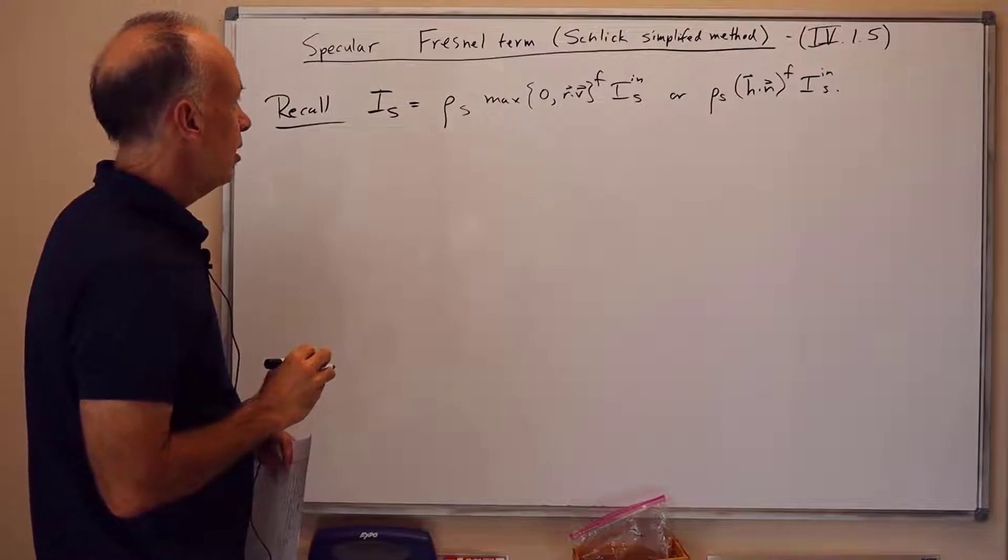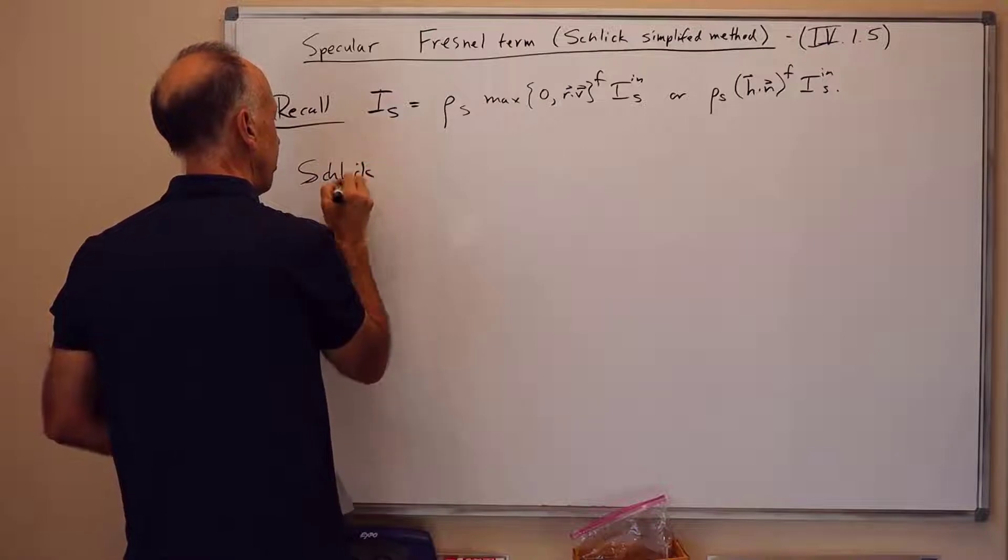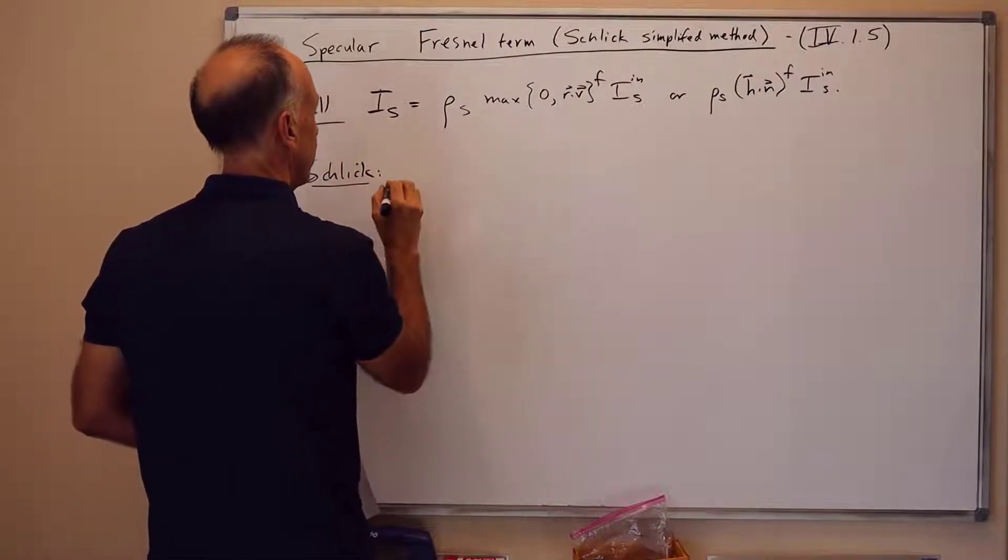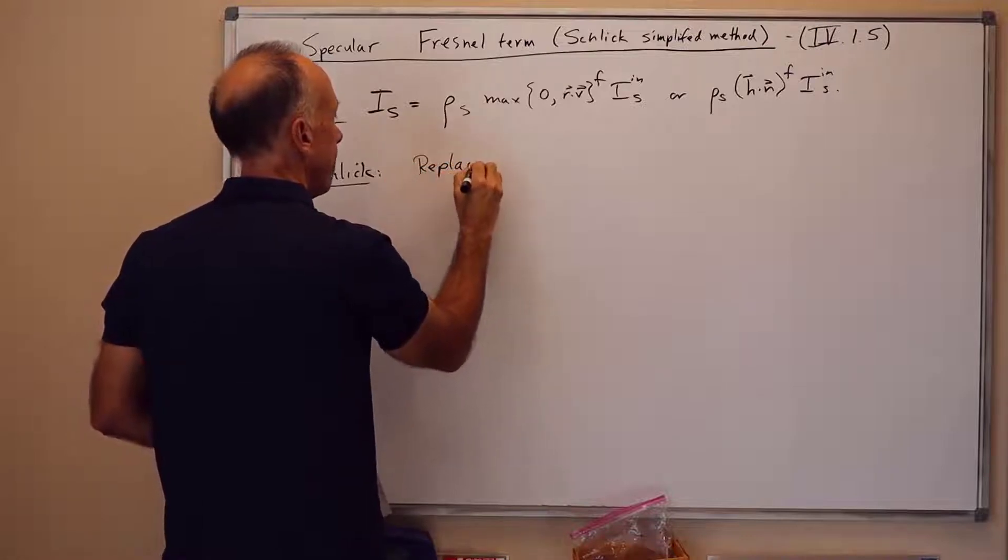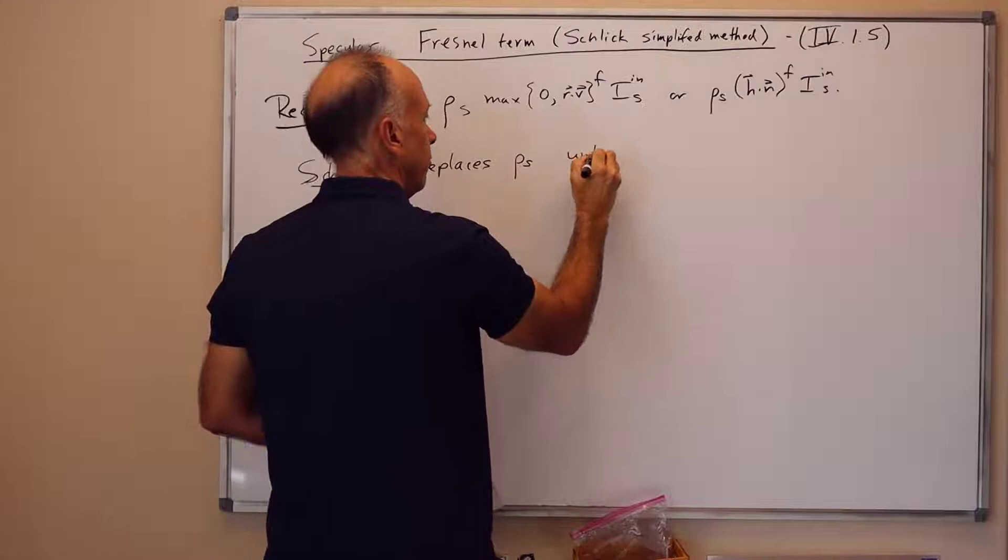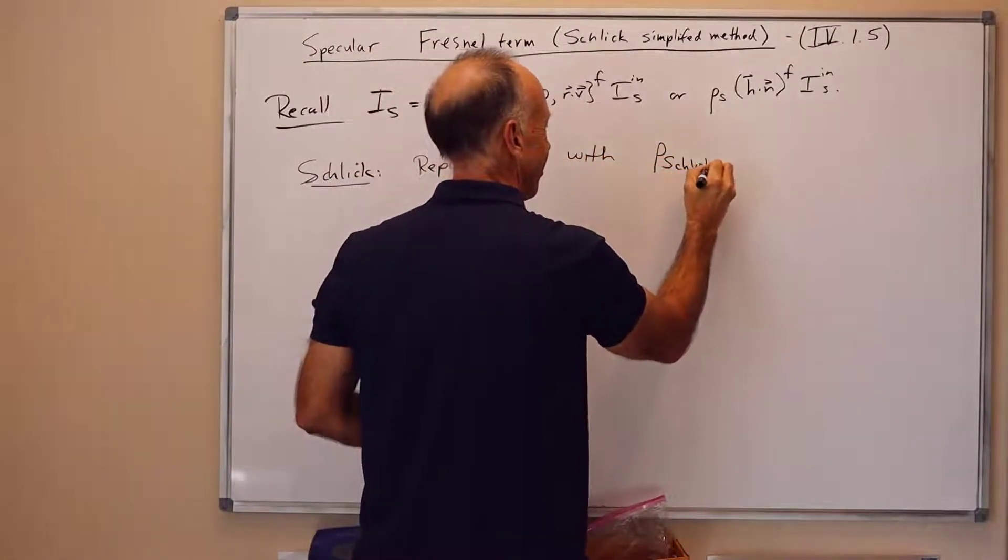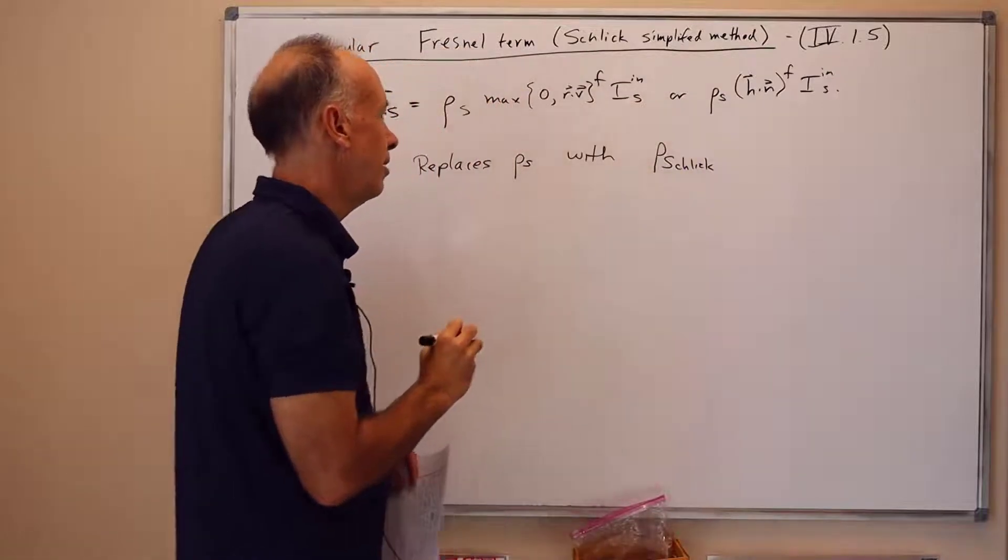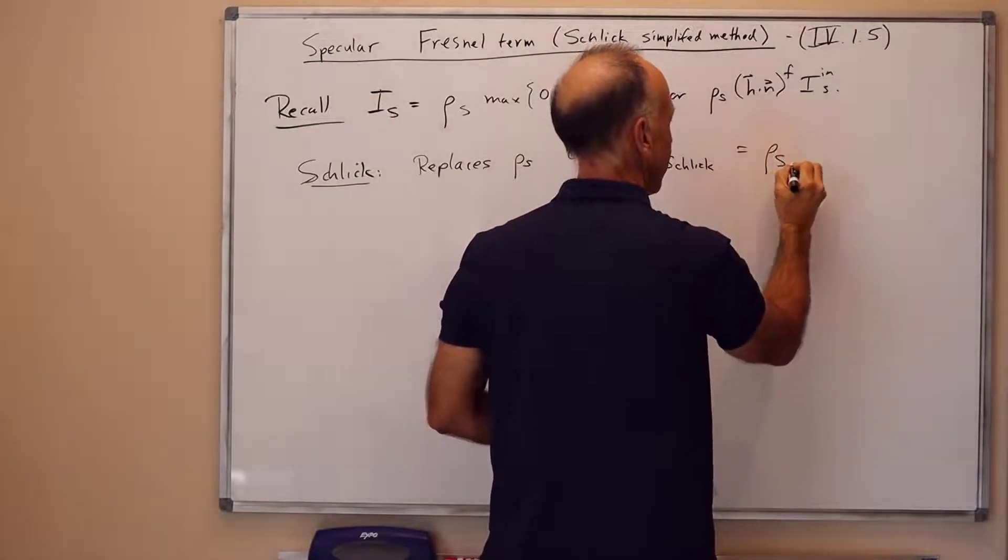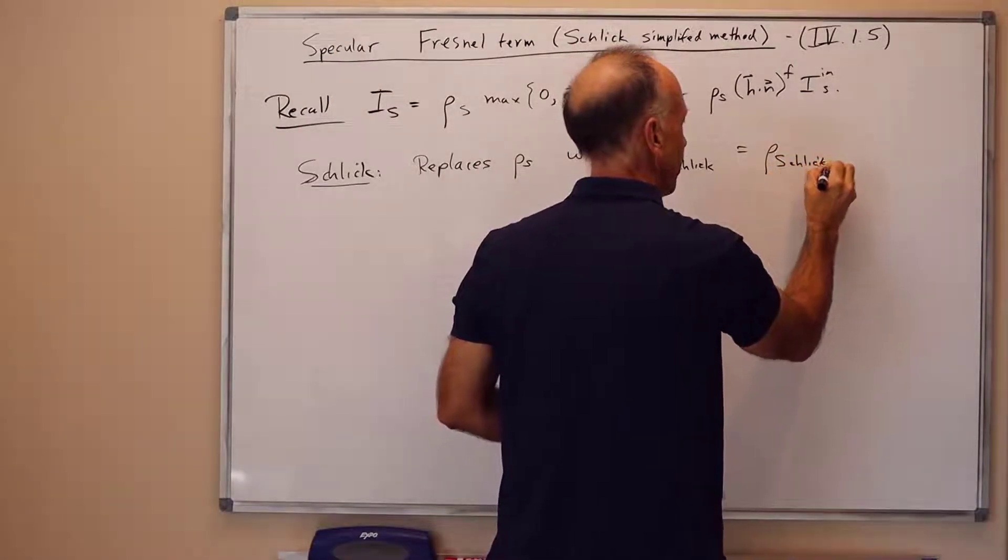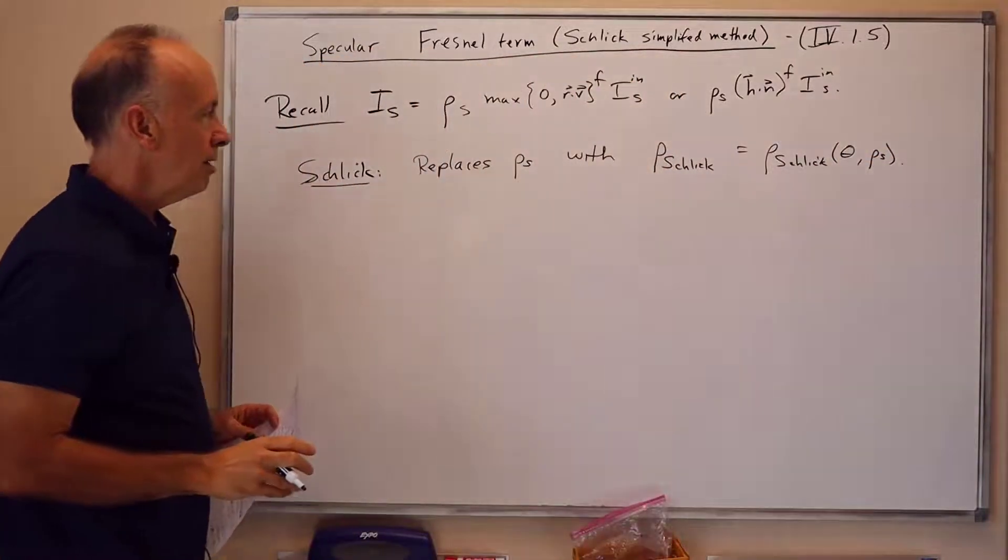The Schlick method for this, so the Schlick correction, this is named after a person named Schlick who first proposed this, the Schlick correction replaces rho sub s with a new term which I call rho Schlick for obvious reasons. This is a function of theta and rho s. So you can think it was rho Schlick as a function of theta and rho s.